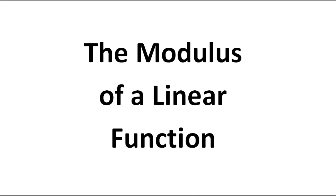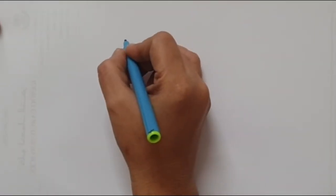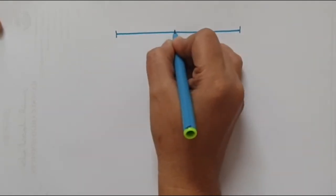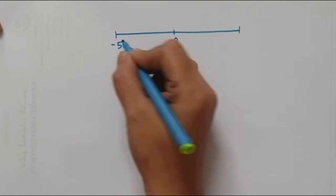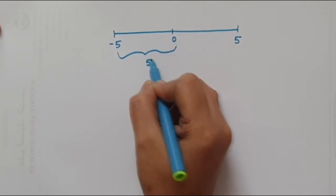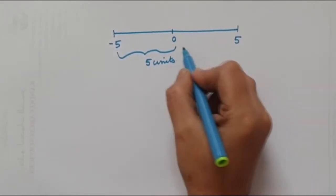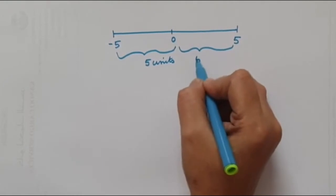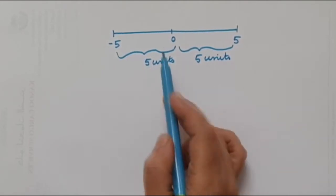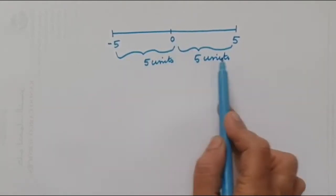The modulus of a linear function. The modulus of a number is nothing but its absolute value. The absolute value gives us the distance from 0 without considering its direction. Suppose if you have 0 over here, and this is negative 5 and this is positive 5 — then the absolute value is nothing but the distance. Here it is 5 units and here too it is 5 units. So the absolute value is the distance from 0 to negative 5 or 0 to 5 — both give us the same unit.